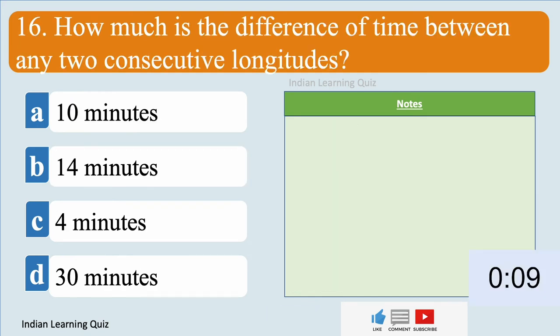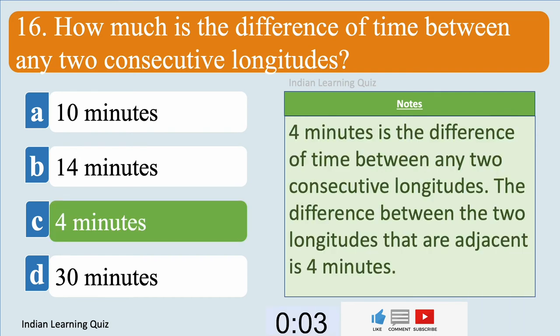How much is the difference of time between any two consecutive longitudes? Answer: Four minutes.